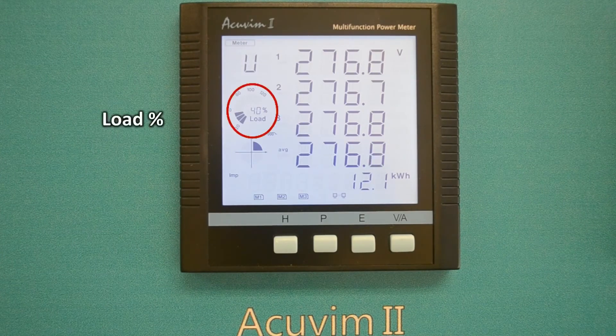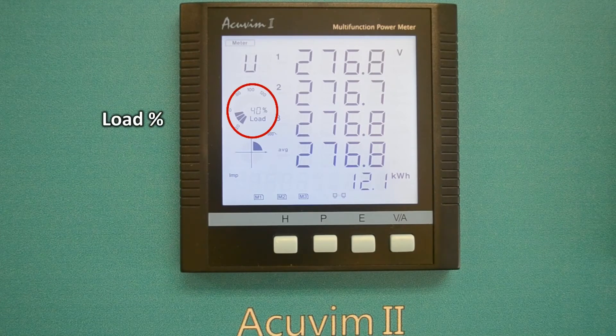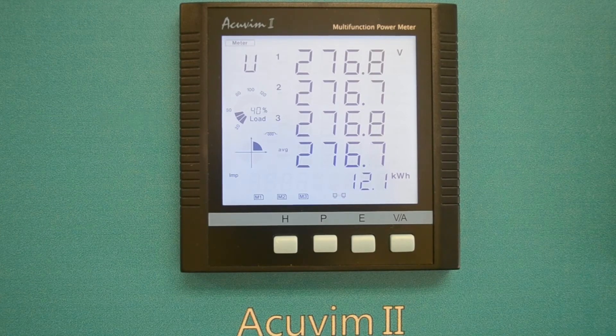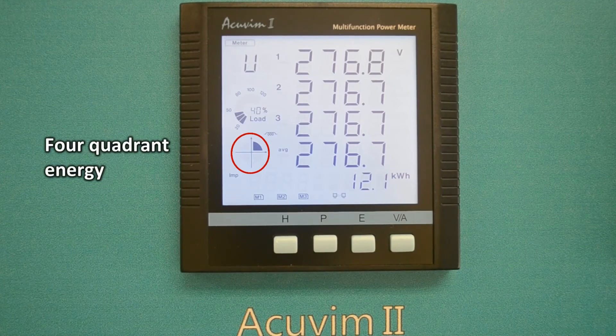The load percentage indicates the percentage of load current to nominal current. The four quadrant graphic displays four quadrant energy conditions.